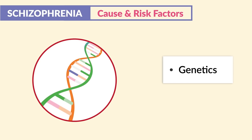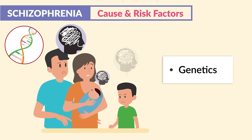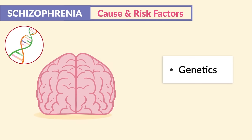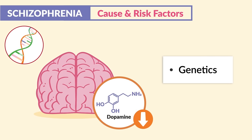Now for the causes and risk factors, genetics plays a huge role. So if a parent has schizophrenia, then the children are more likely to have it too. And it's thought to be caused by a decrease in dopamine within the brain.